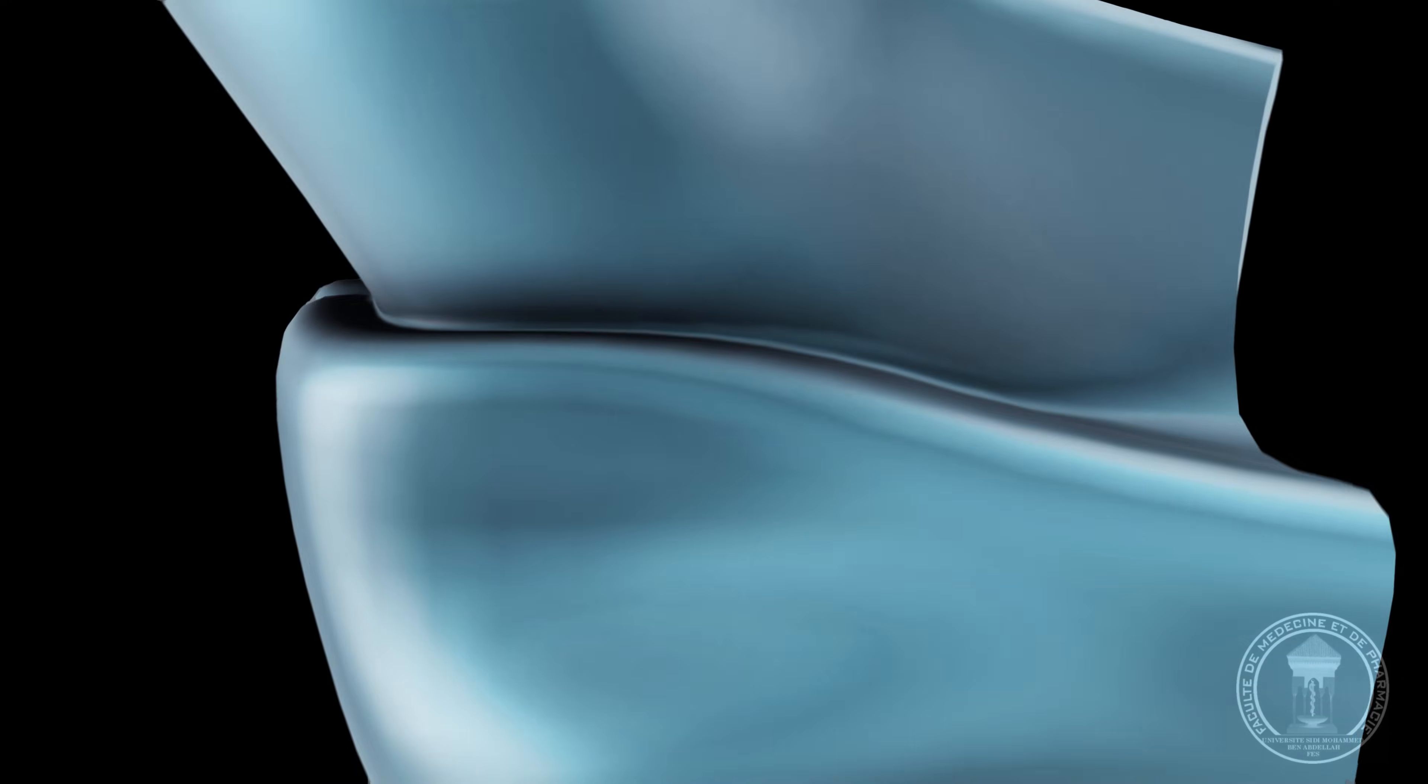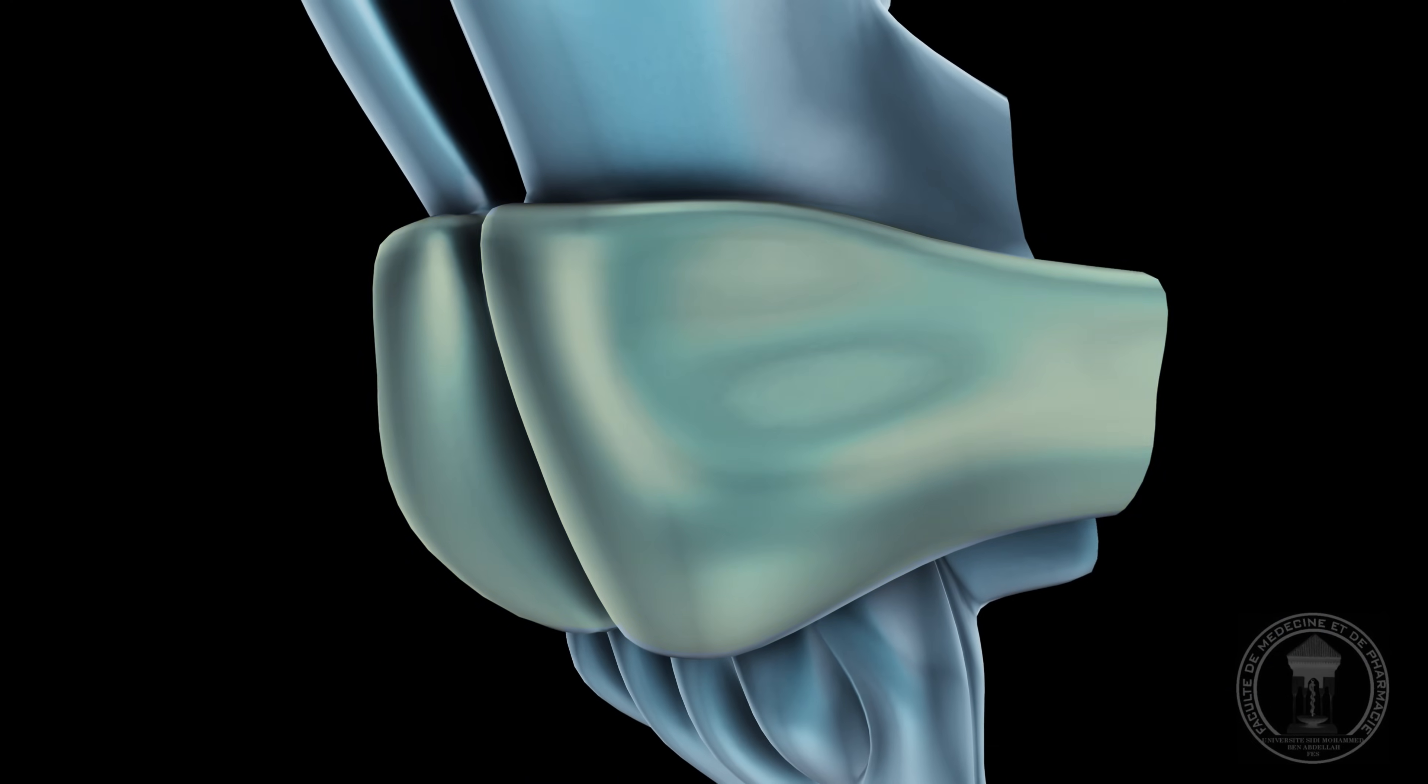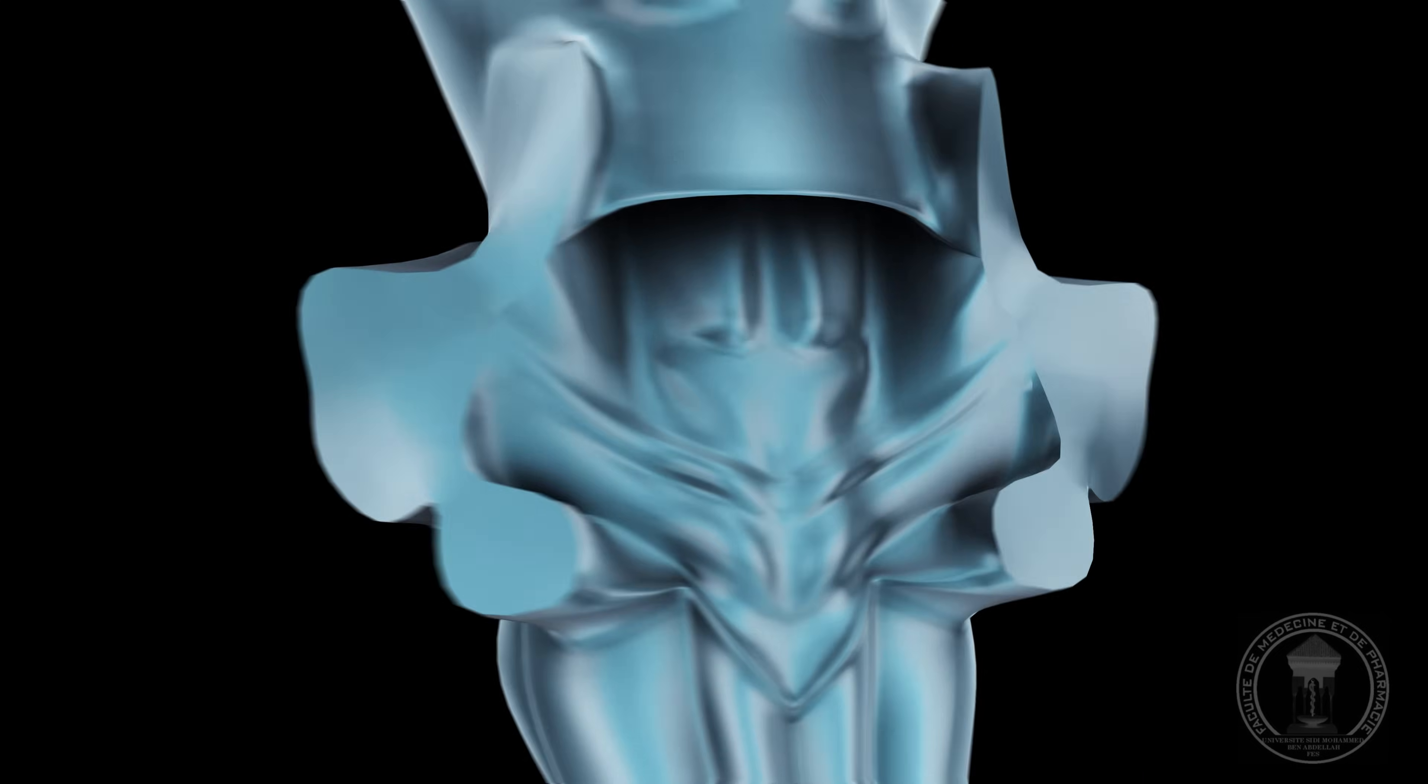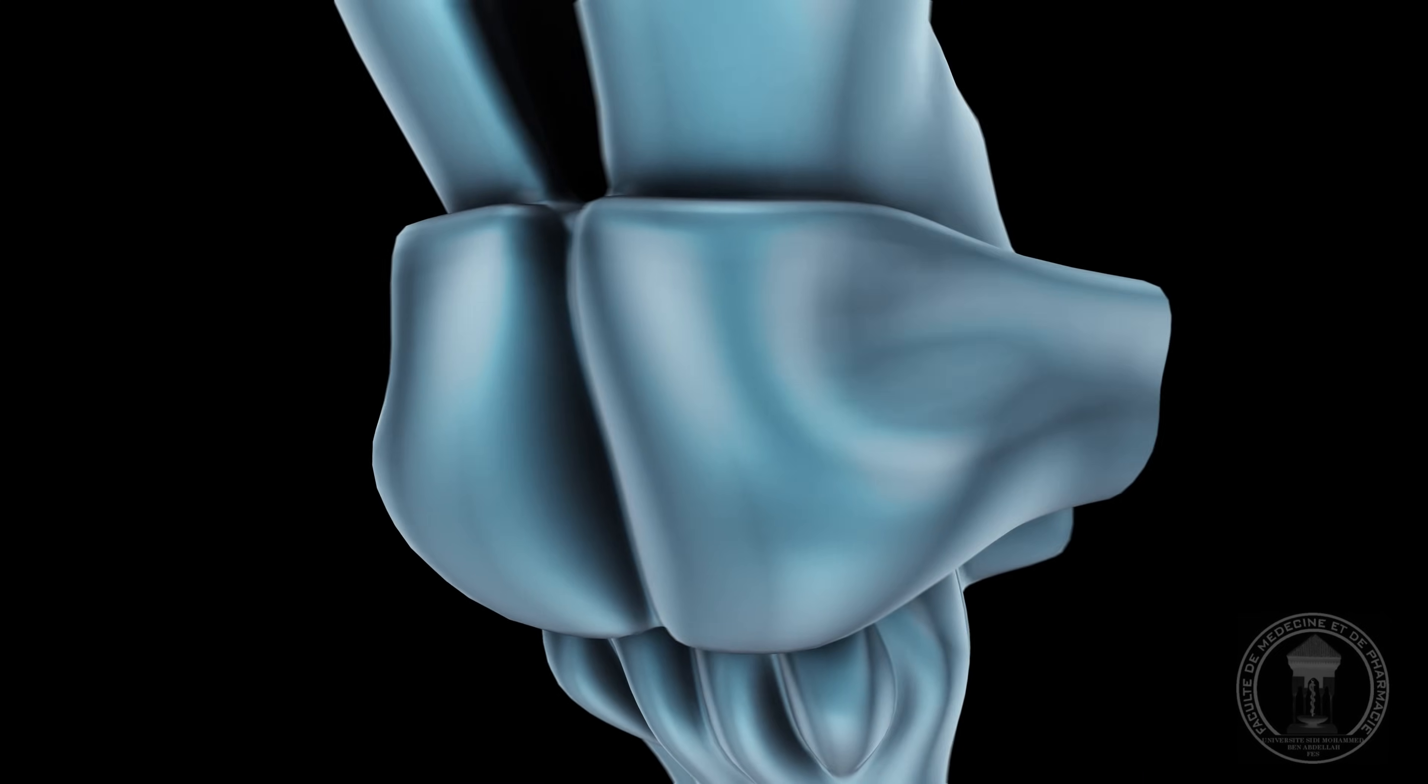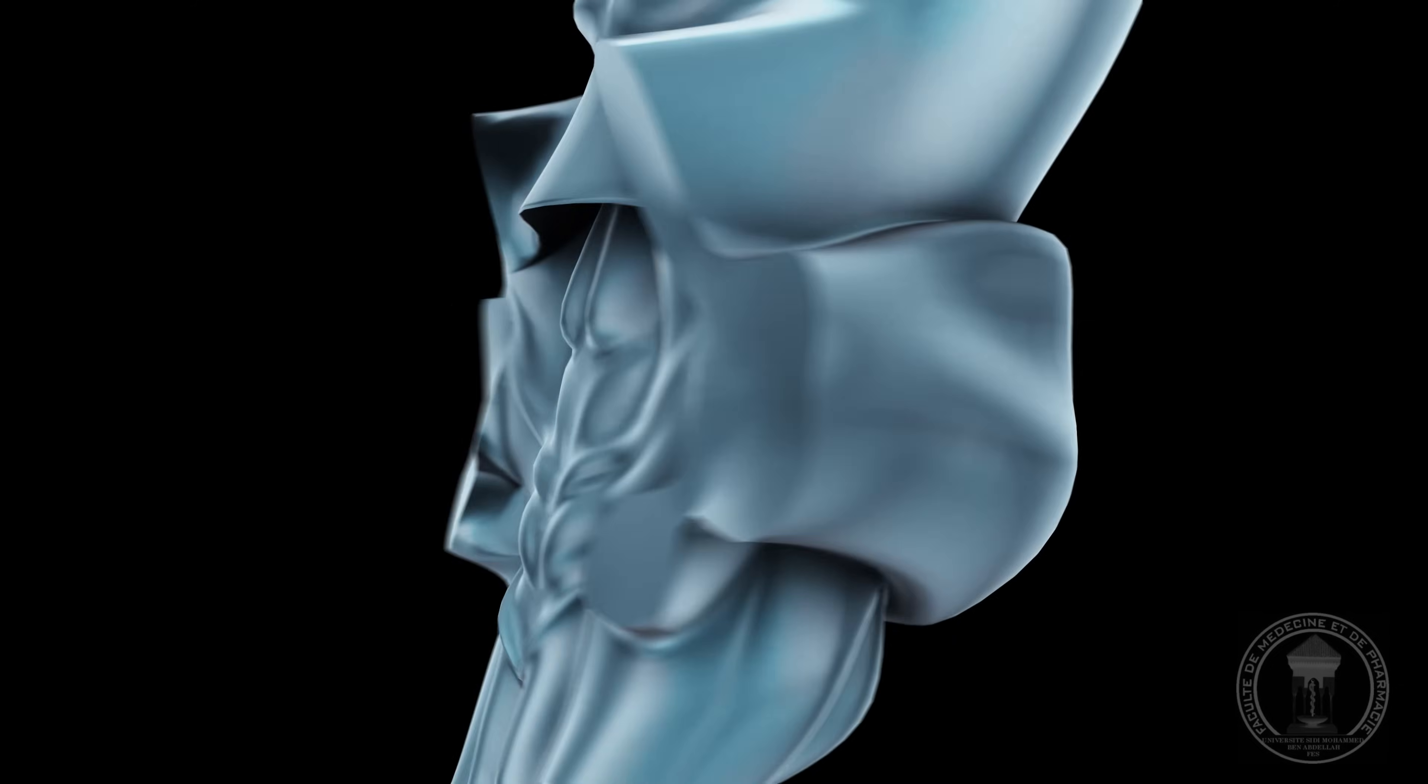The pons, also known as the pons varolli, is the middle part of the brainstem. It plays an important role in motor functions with its relay position between the forebrain and the cerebellum.